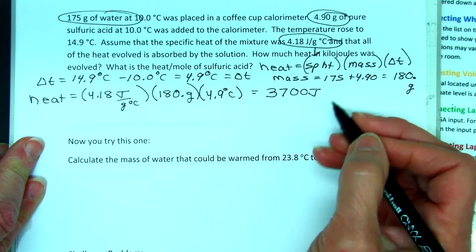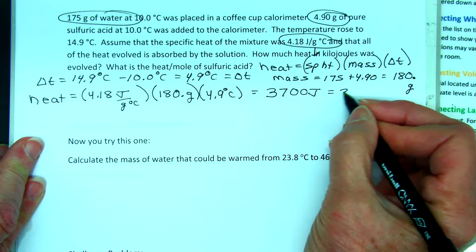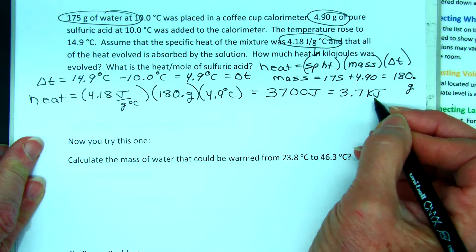It asks for heat in kilojoules. So we divide by 1,000 and we get 3.7 kilojoules.